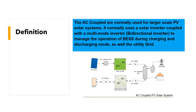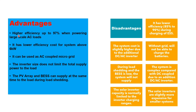The general advantages of an AC coupled PV solar system: higher efficiency up to 97% when powering large-scale AC loads; lower efficiency cost for systems above 6 kilowatts; it can be used as an AC coupled microgrid; the inverter size does not limit the total supply power to the load; and the PV array and battery energy storage system can supply at the same time to the load during load shedding. That is the main advantage of AC coupled compared to DC coupled.